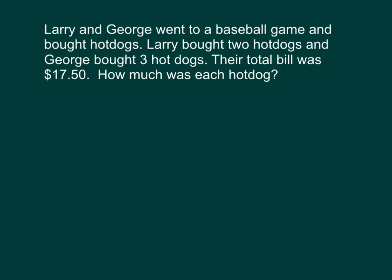Here's the first problem that we'll do together. Larry and George went to a baseball game and bought hot dogs. Larry bought two hot dogs and George bought three hot dogs. Their total bill was $17.50. How much was each hot dog? So notice a few things. There's this word two here, which represents a number. Even though the numbers are written here, this is a number also. Don't forget and read through that and not look at that.